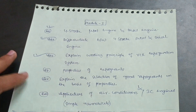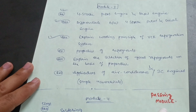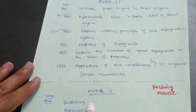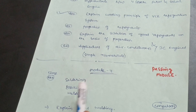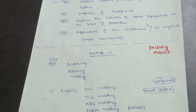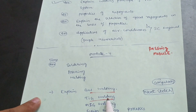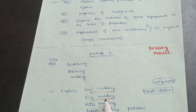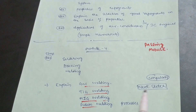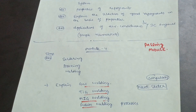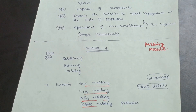Module 4 is also a passing module. Focus on soldering, brazing, and welding — sometimes VTU will ask you to differentiate between them. Important questions include gas welding, TIG welding (Tungsten Inert Gas), and MIG welding as fusion welding processes. You have to draw neat sketches first, then write the theory based on what you understand from these concepts.